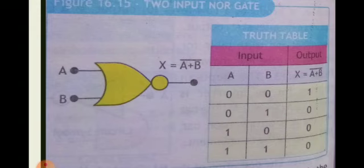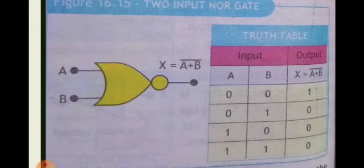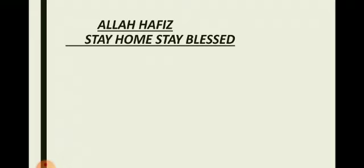In the truth table, there is only one condition in which the output will be high: if both inputs show the low values. In the remaining three possibilities, the output will show the low value if both inputs are high, or any one input is high. So this covers all five basic logic gates — their circuit symbols, simple logical drawings, and truth tables. I hope you understood everything clearly. Thanks for listening. Allah Hafiz, stay home, stay blessed.